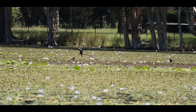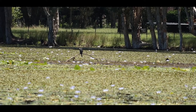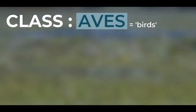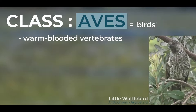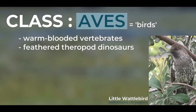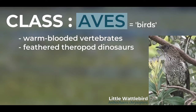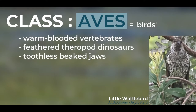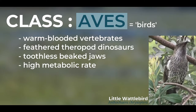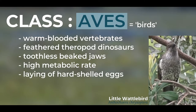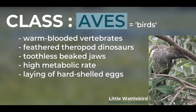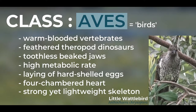Let's now zoom out and look at the broader structure of the avian taxonomic system. All birds belong to one single biological class — the class Aves, which simply means birds in Latin. Birds are warm-blooded vertebrates that are in fact feathered theropod dinosaurs, making them the only known living dinosaurs. They are characterised by feathers, toothless beaked jaws, a high metabolic rate, and of course the laying of hard-shelled eggs. Other features birds possess include a four-chambered heart and a strong yet lightweight skeleton.